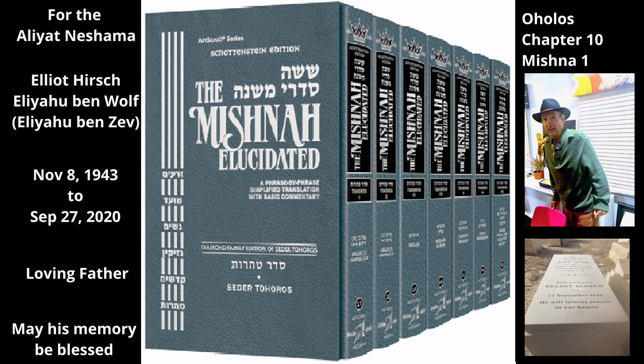The mishnah returns to a case where the opening is not covered. It considers the law where a kazais of corpse — the minimum amount of corpse flesh that can spread tuma — is partially under the roof and partially under the opening. If part of the tuma is in the house, i.e. under the roof, and part of it is opposite the opening, utensils under the roof become tamei, and utensils directly above the part of the tuma that is under the opening also become tamei. Utensils under the roof become tamei because they are in the same ohel as part of the kazais under the roof. Utensils above the part of the kazais that is under the opening also become tamei, because they are in the path of that piece's tuma, which travels directly upward to the sky. Although there is less than a kazais in either place, each piece transmits tuma because it is part of a complete kazais.